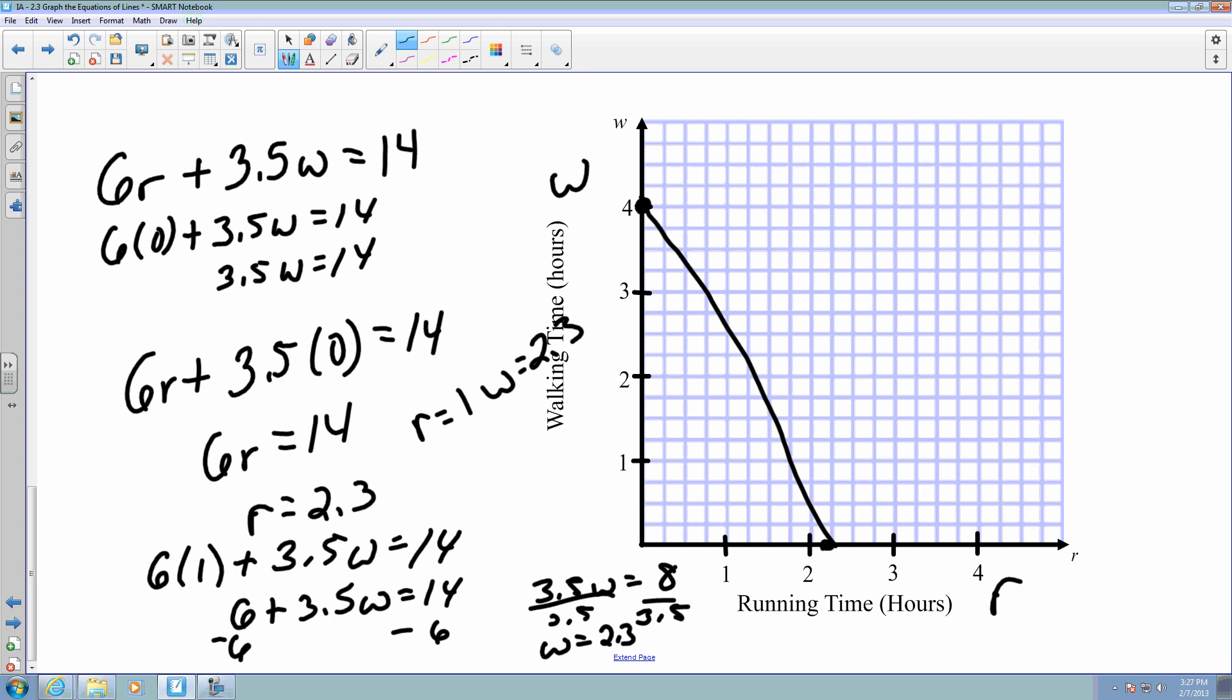The only thing you couldn't do is my w couldn't be any higher than 4, and my r could not be any higher than the 2.33, because that would max out my values for my running time.